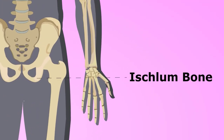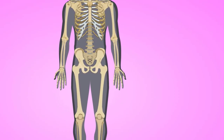Hi, I am the Expertizer Academic Tamil channel. I am going to talk about easy science — specifically human bones. This is our second class. In the first class, we talked about the head and chest. Now, we will talk about the remaining hip and leg bones.